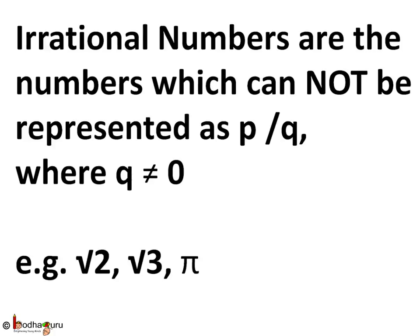An irrational number is a number that cannot be written in the form p by q, where p and q are integers and q not equal to 0. Remember, the numbers which cannot be represented as p by q where q is not equal to 0 are irrational numbers. For example, square root of 2 is an irrational number because it cannot be written as p by q.